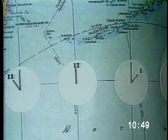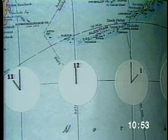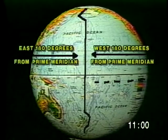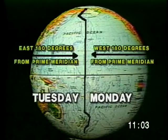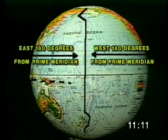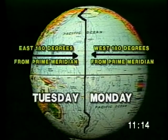So traveling east or west across the date line changes the calendar day. A traveler crossing the date line going westward loses a day — he has to move the calendar forward, for example from Monday to Tuesday. Similarly, a traveler crossing the date line going eastward gains a day — he has to put the calendar back a day, for example from Tuesday to Monday.